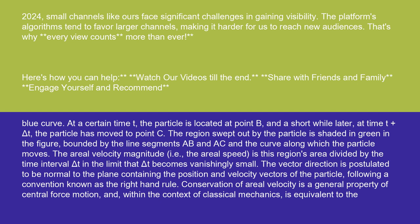The region swept out by the particle is shaded in green in the figure, bounded by the line segments AB and AC and the curve along which the particle moves. The aerial velocity magnitude, i.e., the aerial speed, is this region's area divided by the time interval delta t in the limit that delta t becomes vanishingly small.